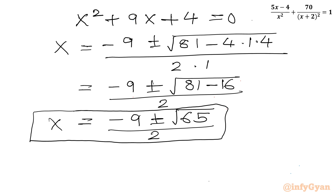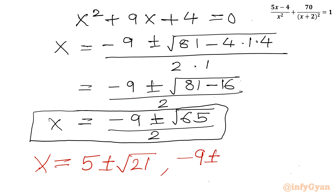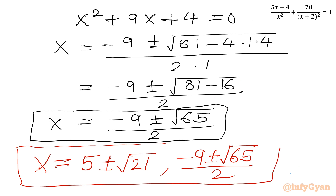So the complete solution is x = 5 ± √21 and x = (-9 ± √65)/2, giving overall four real solutions for this rational equation. This brings the end of this video. Thank you friends for watching — do not forget to like, share, and subscribe. Bye-bye till next video, good luck, take care of yourself!